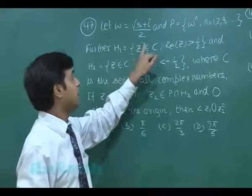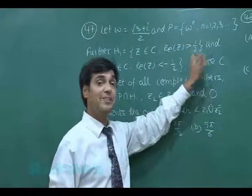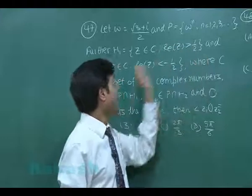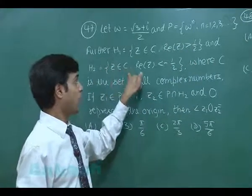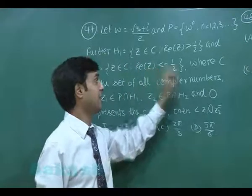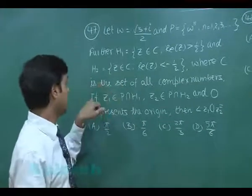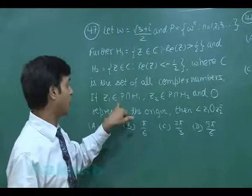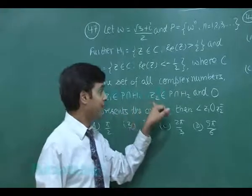z from the set of complex numbers such that the real part of z is greater than half. Another set H2 is given as z from the set of complex numbers such that the real part of z is less than minus half, where C is the set of complex numbers.